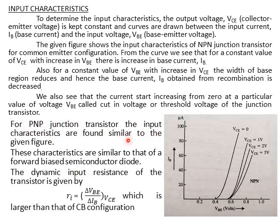For PNP junction transistor, the input characteristics are found similar to the given figure — similar to those of the NPN transistor. These characteristics are similar to those of a forward-biased semiconductor diode. The dynamic input resistance of the transistor is given by keeping VCE constant, taking a point on the curve, and finding the reciprocal of the slope: delta VBE upon delta IB. This input resistance value is moderate — higher than the very low input resistance of Common Base configuration.